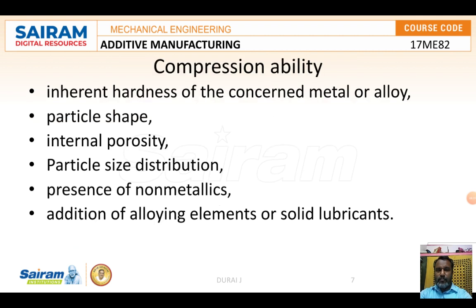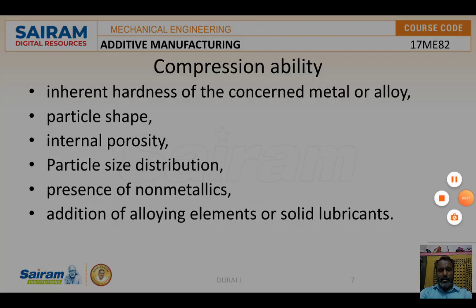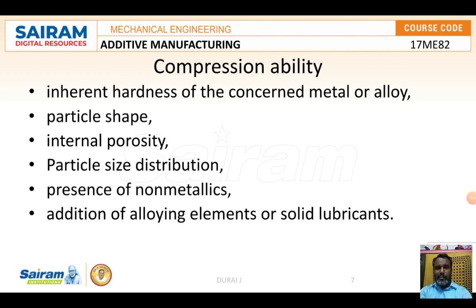Next is compressibility. Factors affecting compressibility include: the inherent hardness of the constituent metal alloy, particle shape and internal porosity, particle size distribution, presence of non-metallic inclusions, alloying elements, and solid lubricants. Regarding inherent hardness, powder particles undergo considerable deformation during pressing, and their work-hardening characteristics have a strong influence on compressibility.